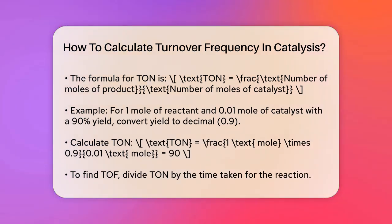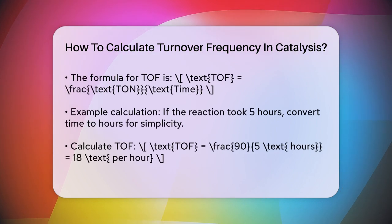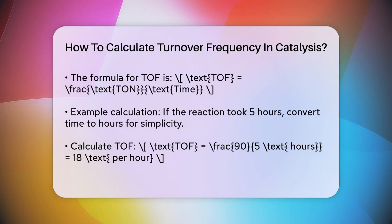Now, to find the turnover frequency, you need to know the time it took for this reaction to occur. The TOF is calculated by dividing the TON by the time taken for the reaction.